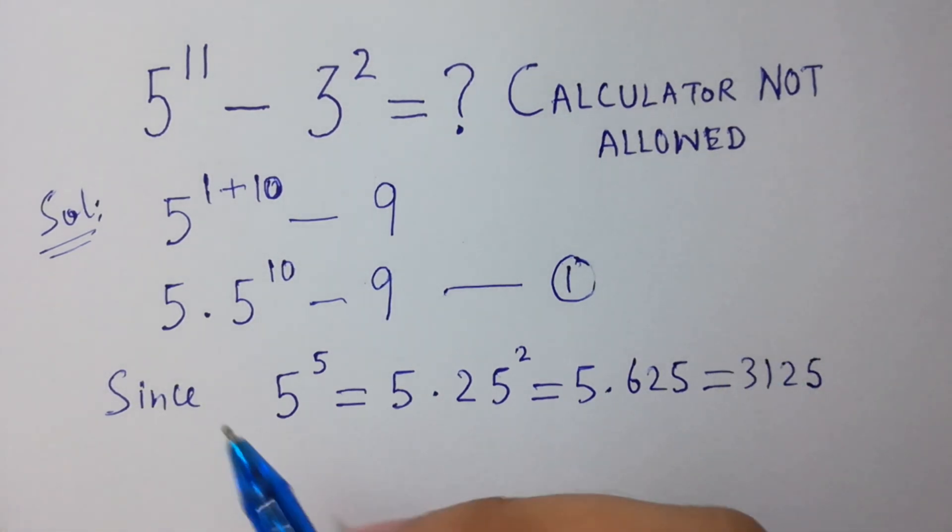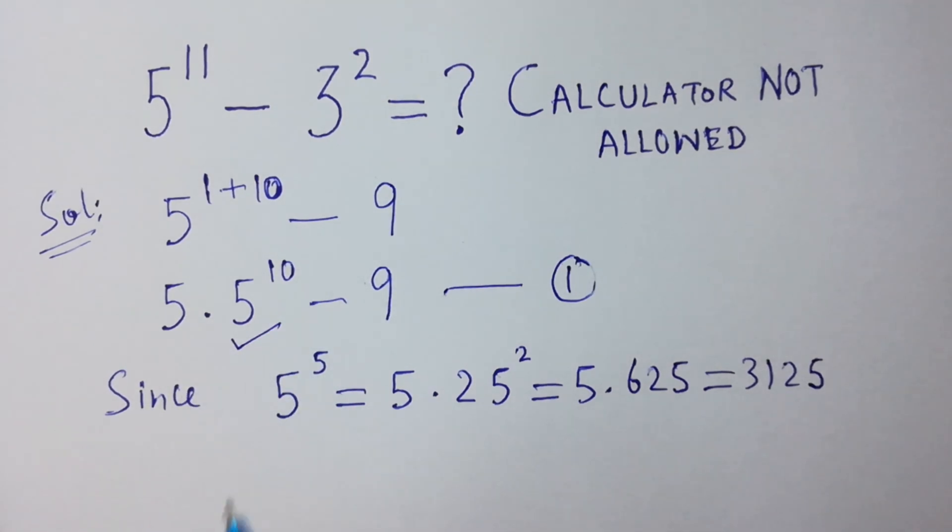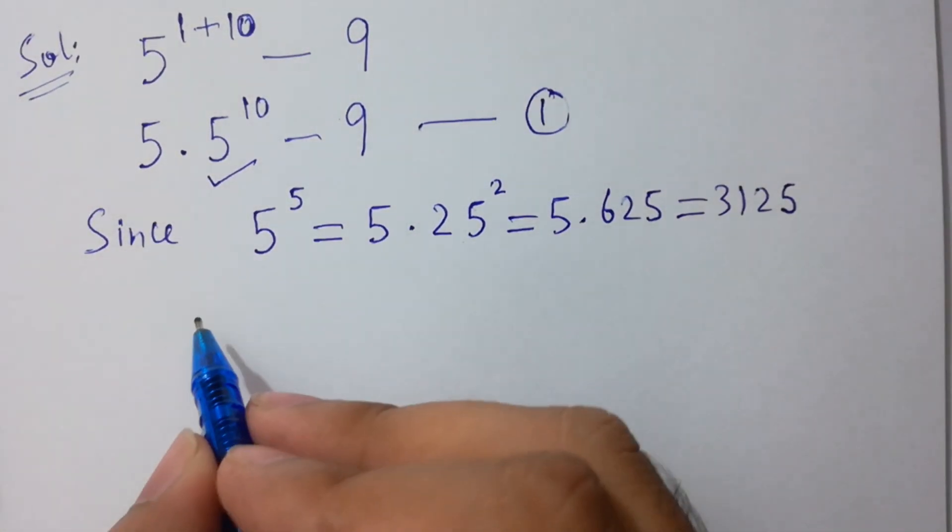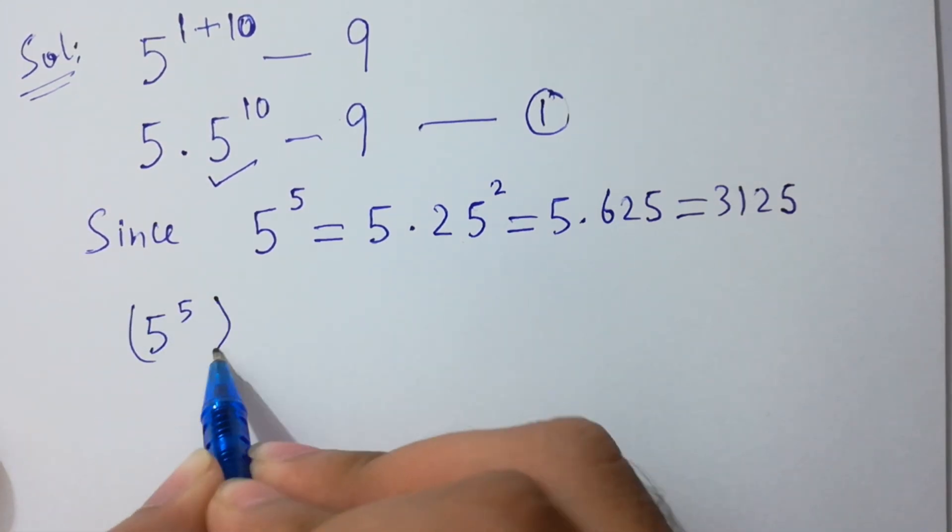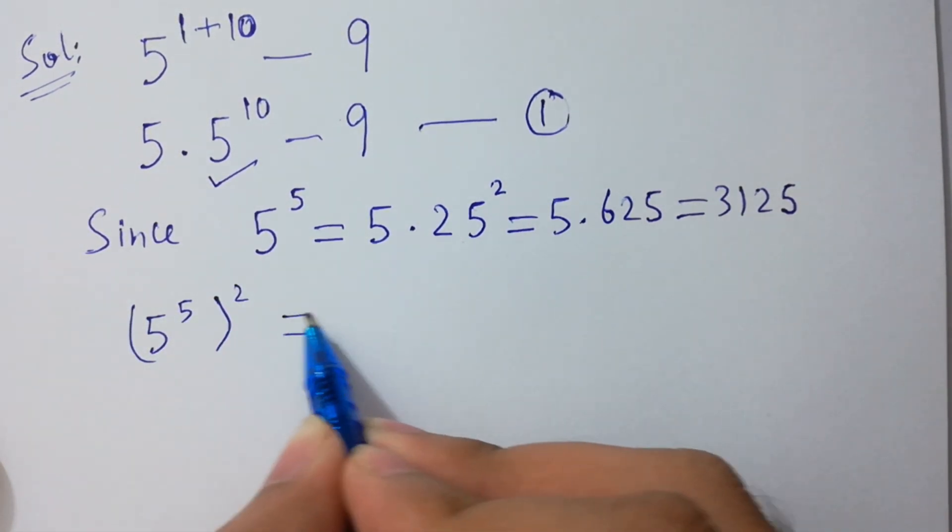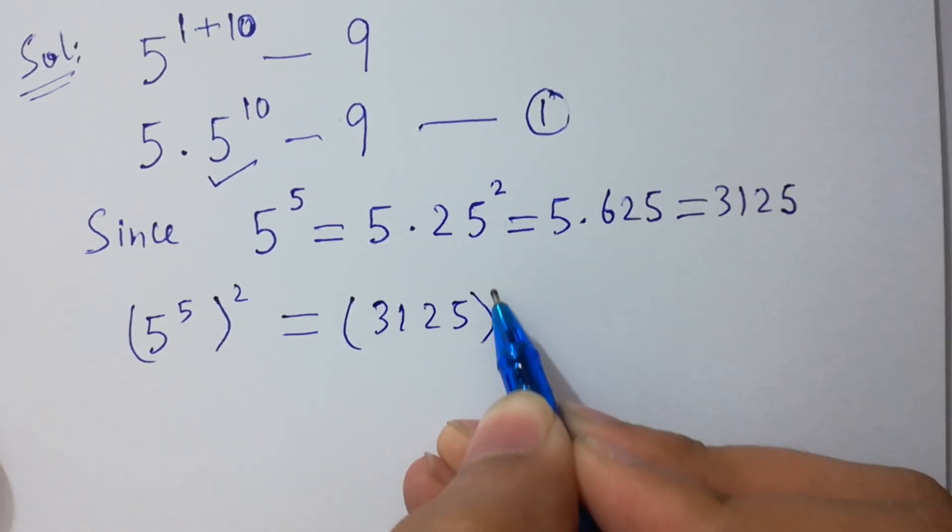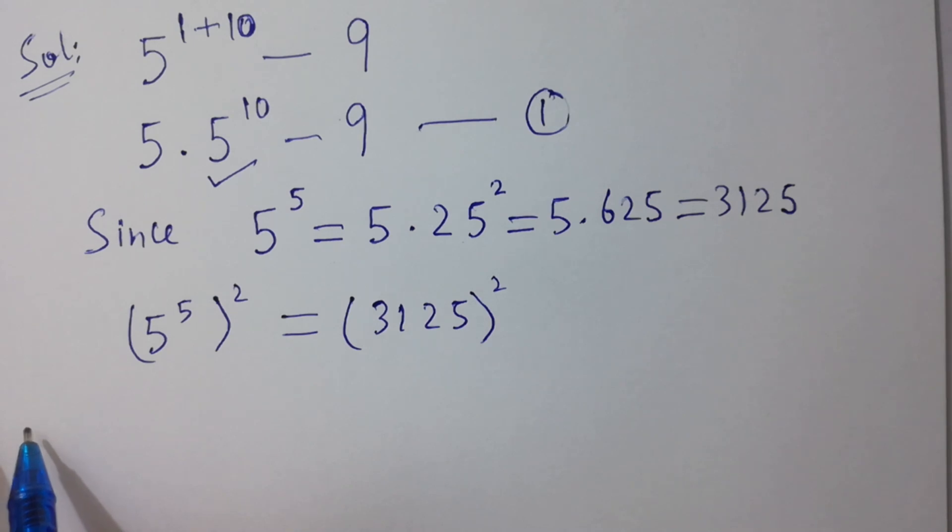Now to find the value of 5 to the power 10, take square on both sides. 5 to the power 5 squared equals 3125 squared. 5 times 2 equals 10, so 5 to the power...